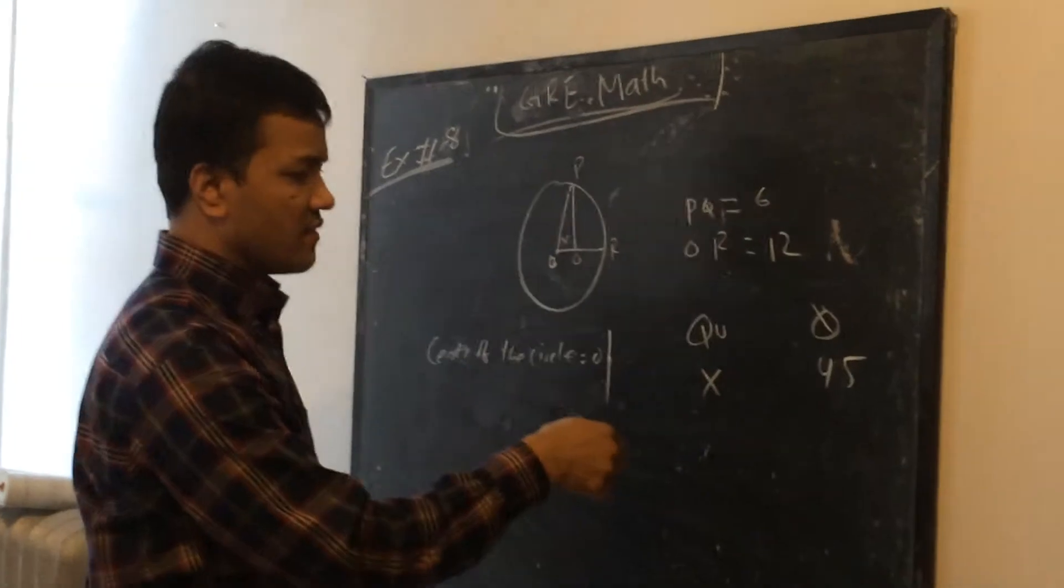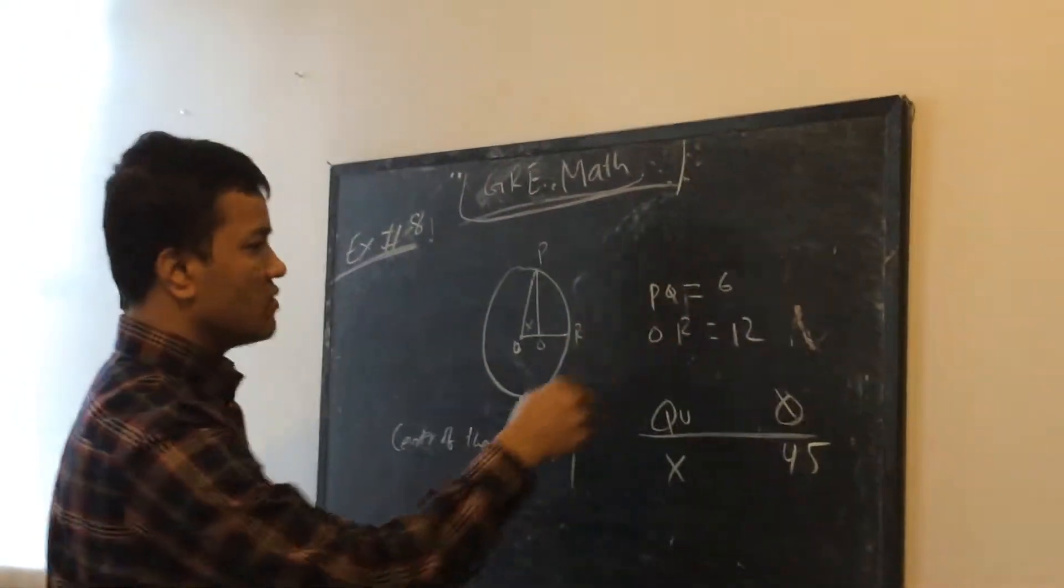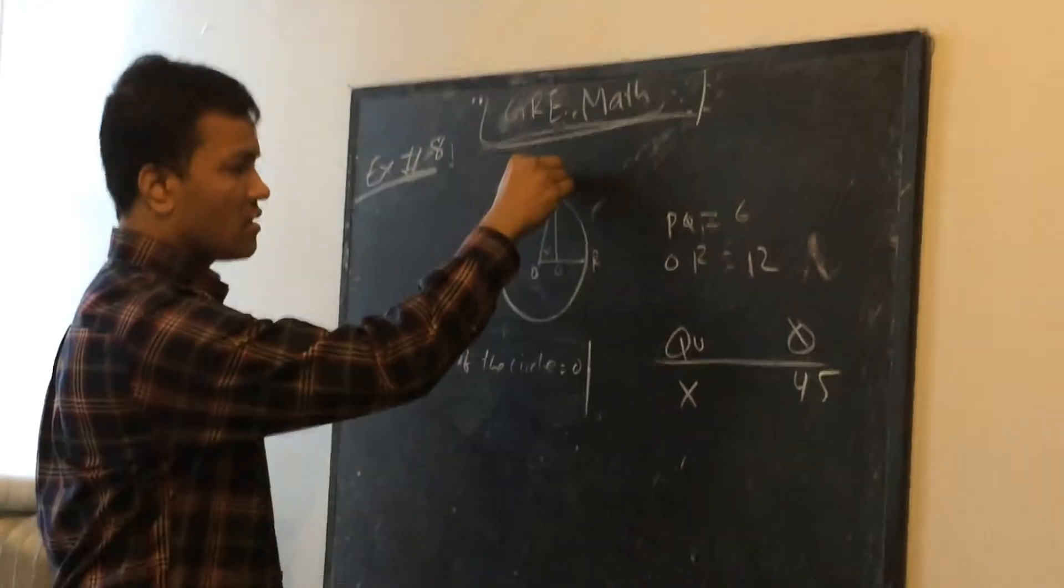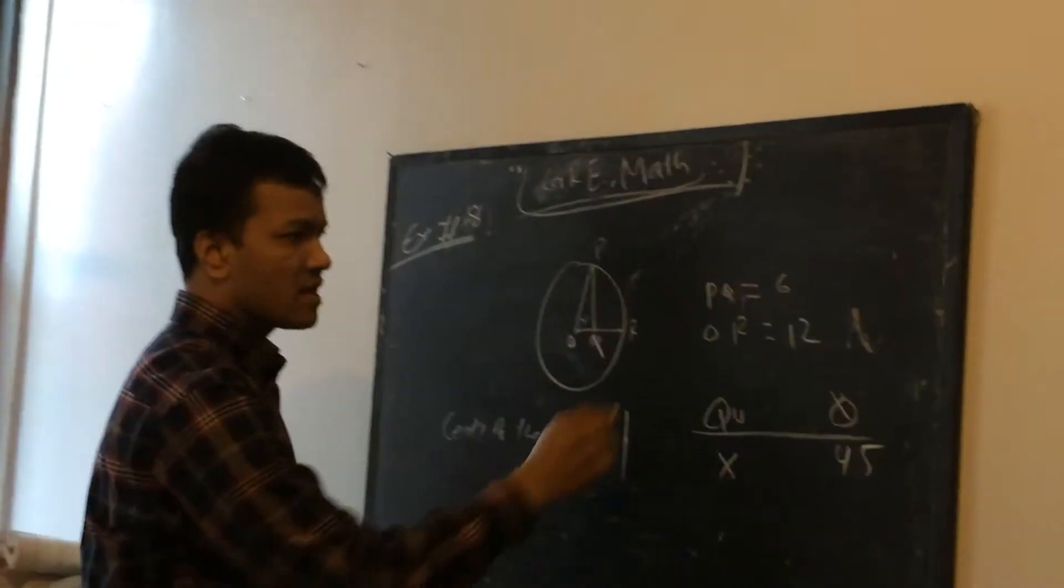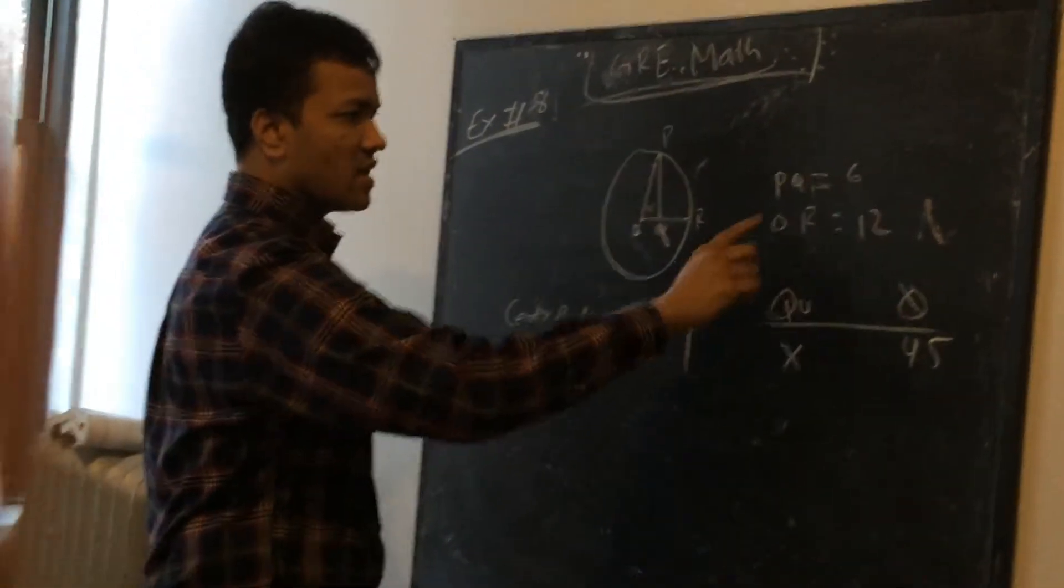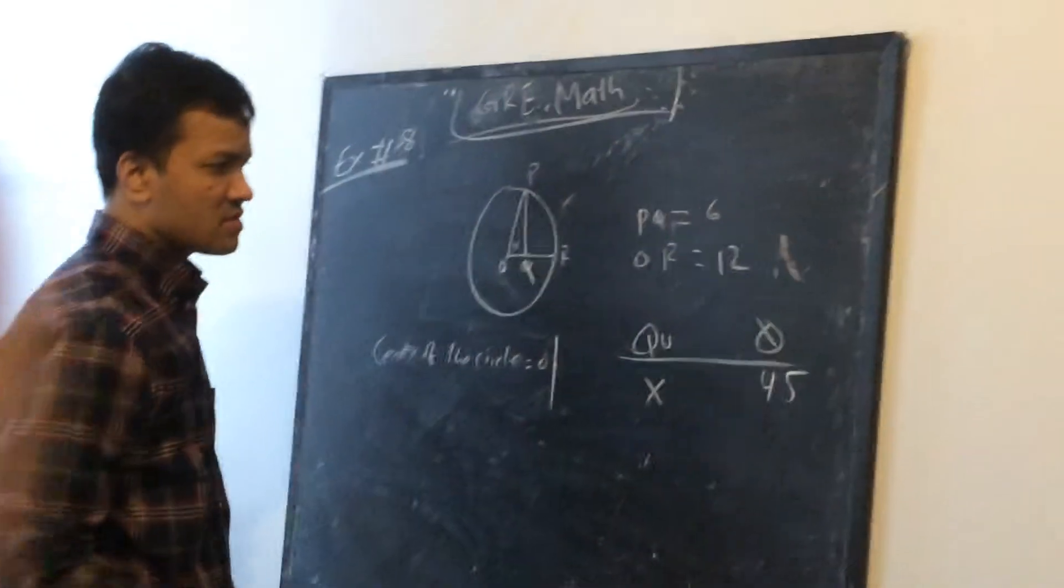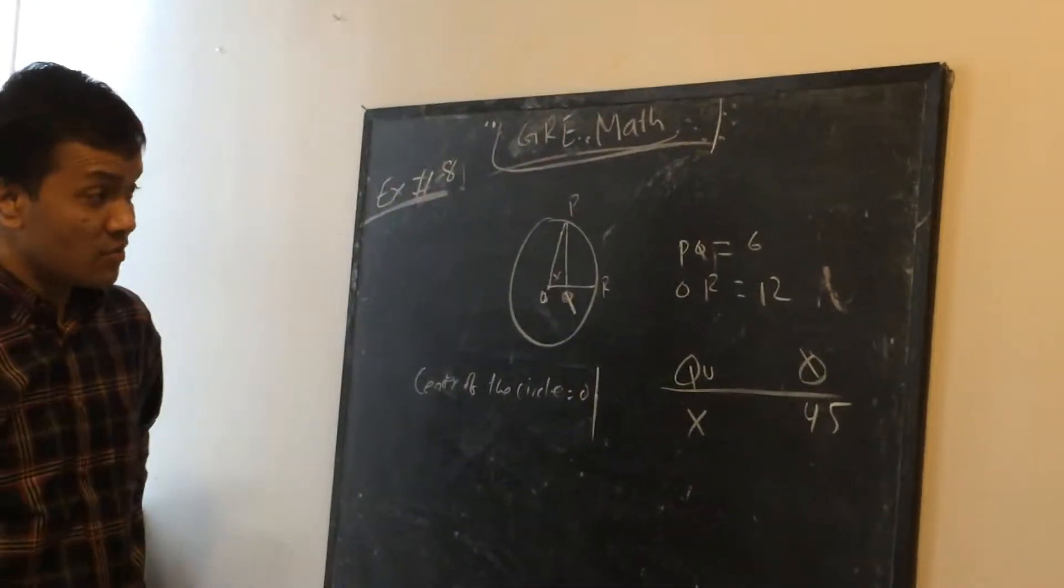Two things are given. PQ is 6. So, PQ. This is Q. PQ is 6. And OR is 12.